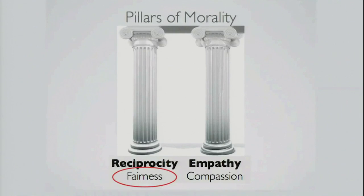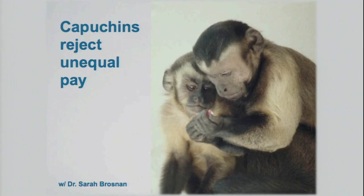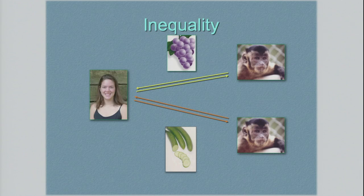A final experiment to mention is the fairness study, which became very famous. After it was done about ten years ago, many more followed. It was originally done with capuchin monkeys — and has since been done with dogs, birds, and chimpanzees — but we started with capuchin monkeys.